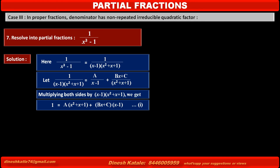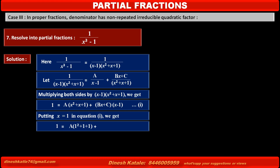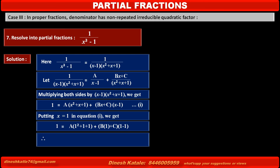Now we have to find the values of A, B, and C. To find A, we cancel the term (Bx plus C) by making (x minus 1) equal to 0. Putting x equal to 1 in equation 1, we get 1 equals A(1 squared plus 1 plus 1) plus (B plus C)(1 minus 1). The second term becomes 0, so solving gives A equal to 1 upon 3.